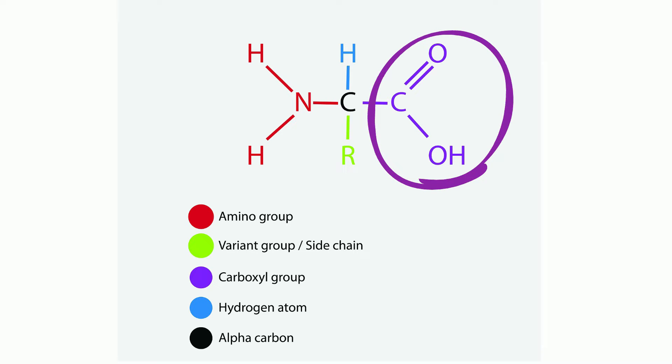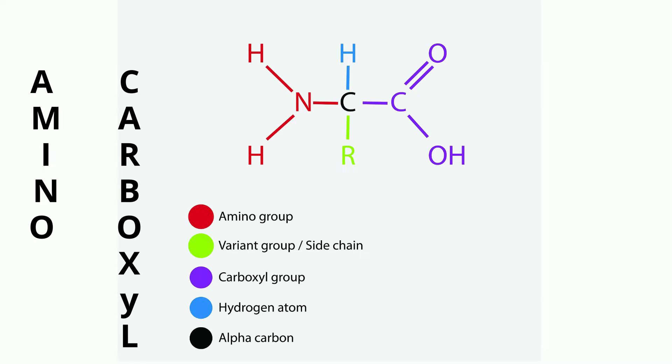Remember, we read from left to right, so A comes before C, so A will be on the left and C will be on the right. You then have a hydrogen attached, and then the R group, also called the side chain.